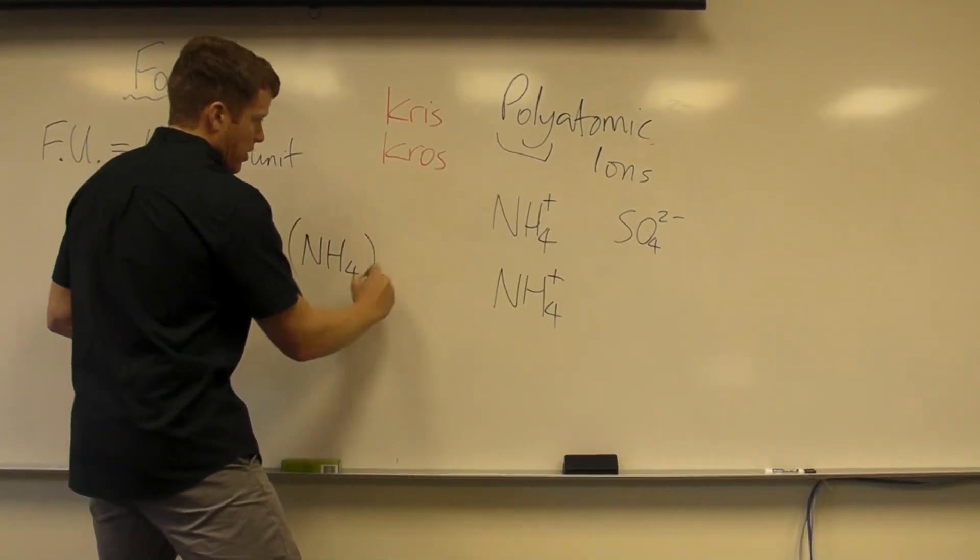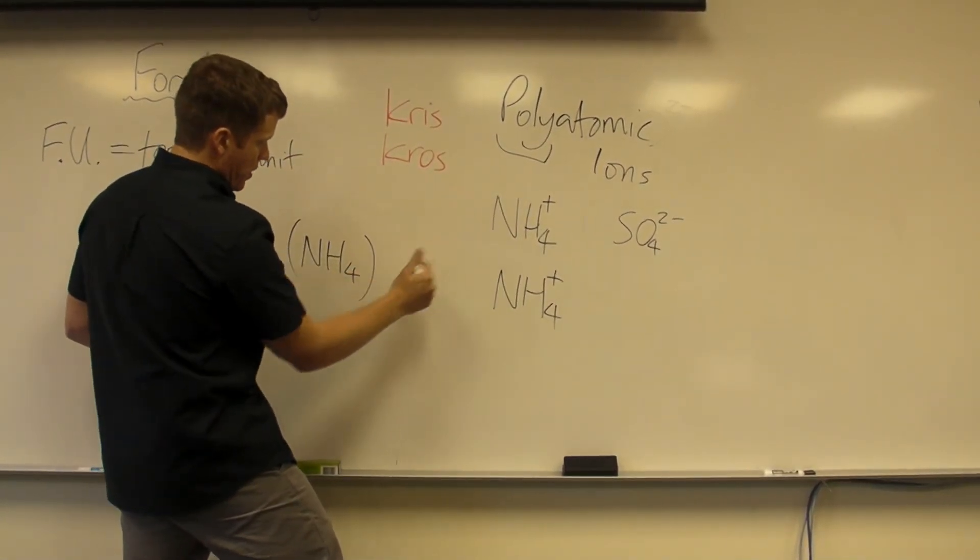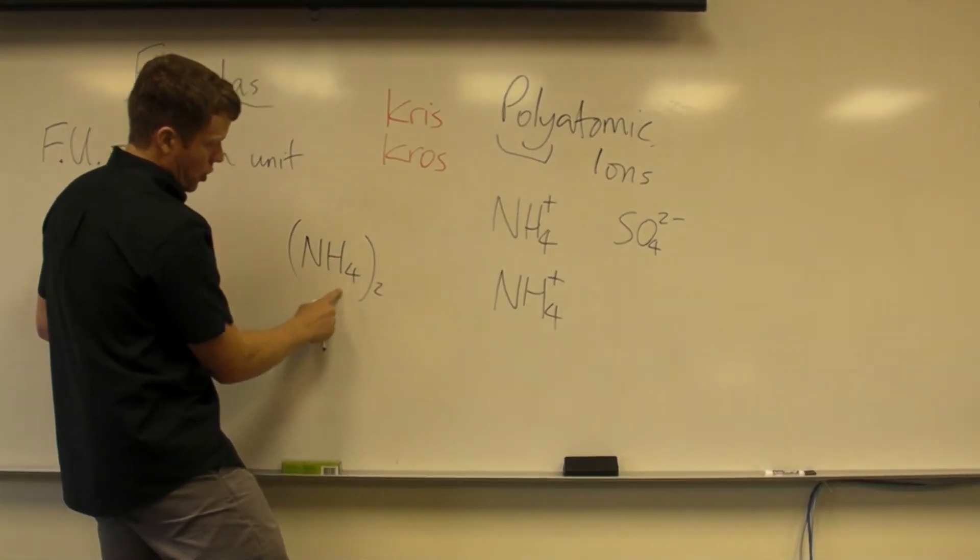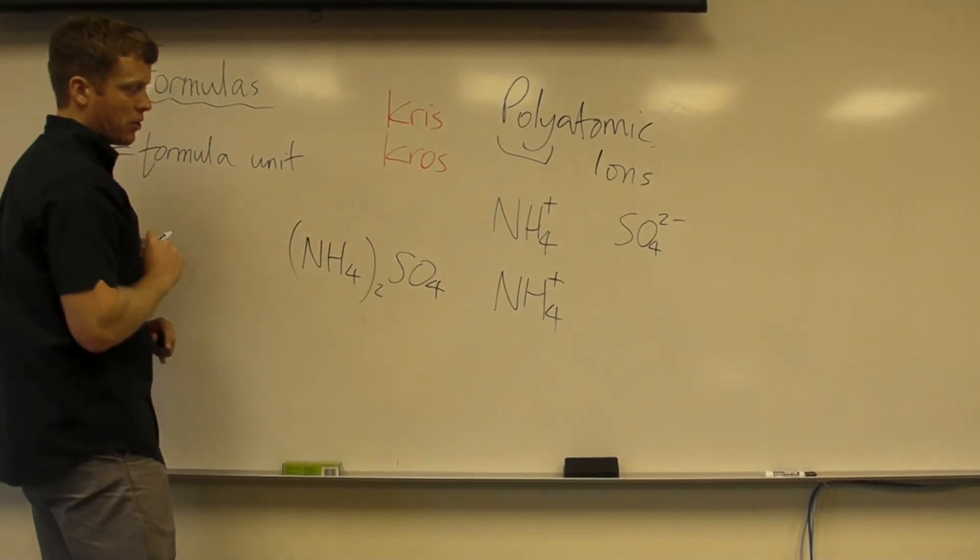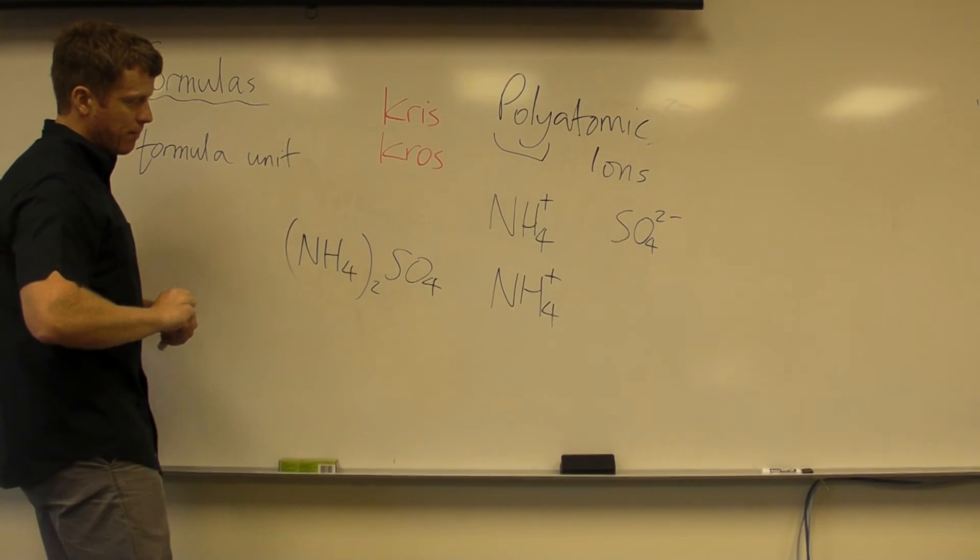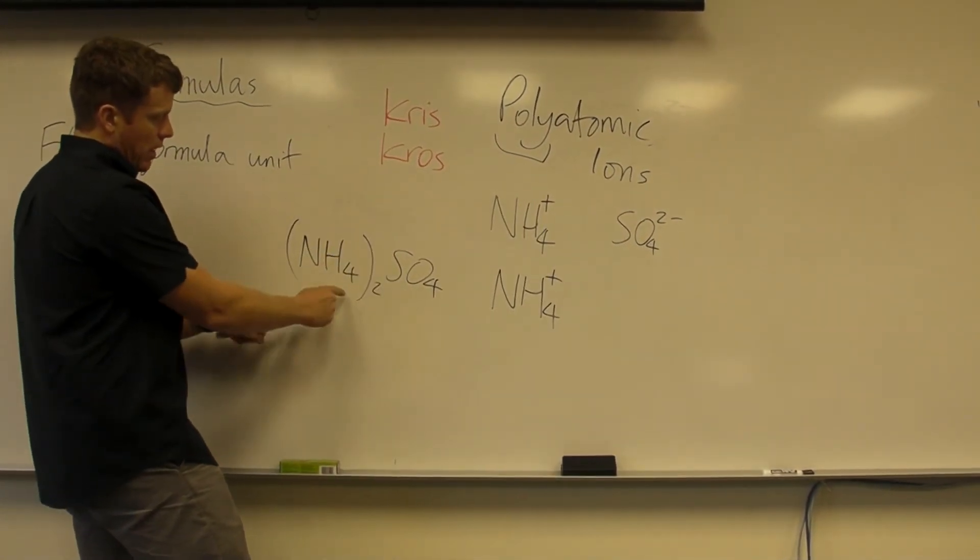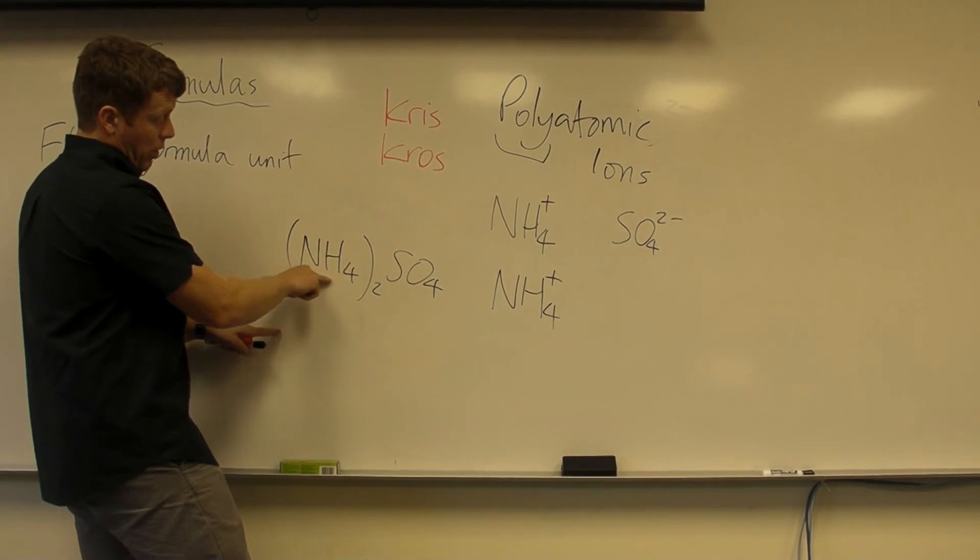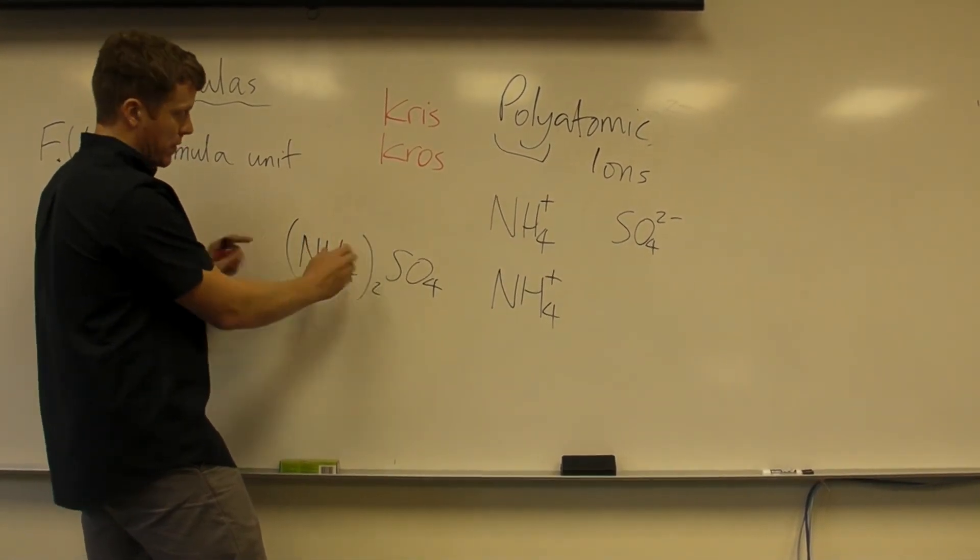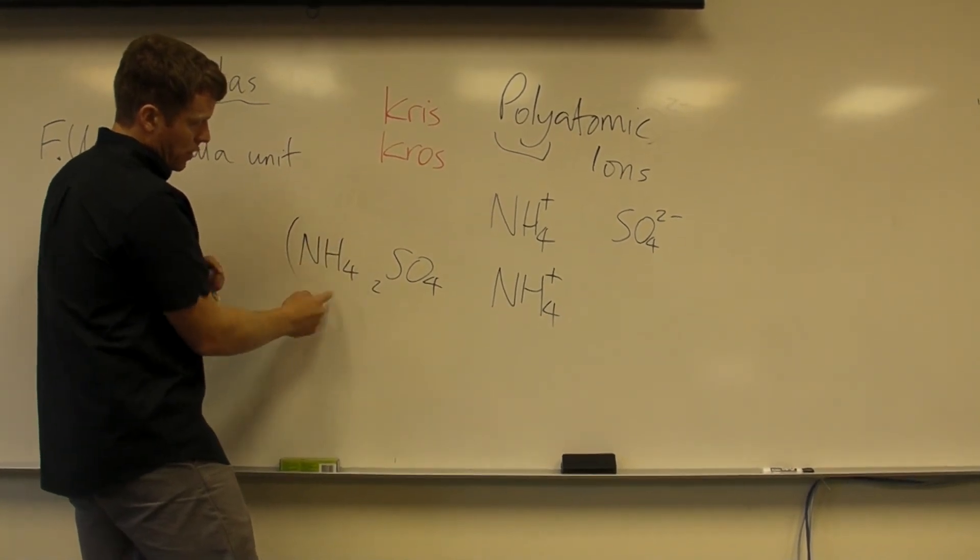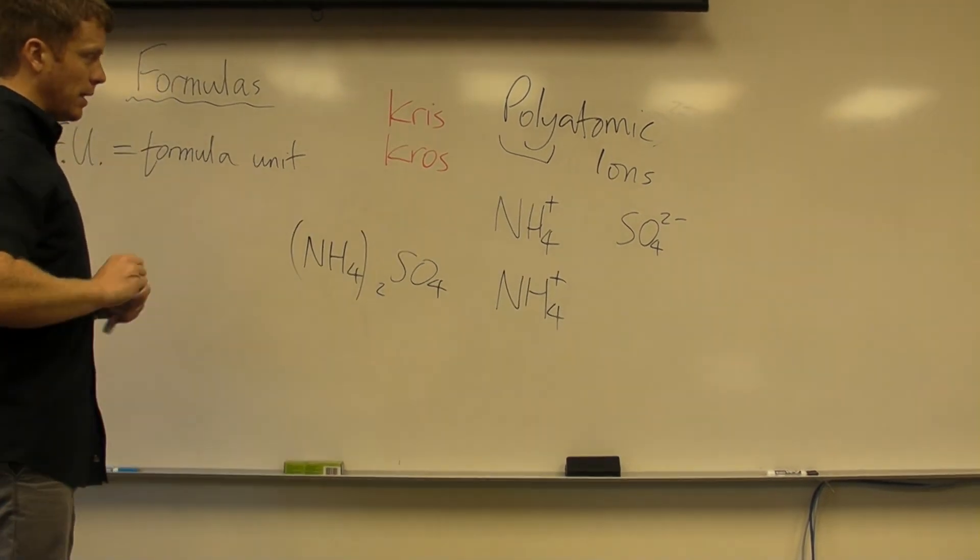The golden rule is that you don't mess with the subscripts ever. So, I have two of these. So, I use parentheses around it to show that there's two. When I just have one, I don't need parentheses. I can just write the ion out. So, two of these for every one of these. This is how you'd handle it if you've already got a number there. You don't mess with that number, but you need to show that there's two of them. You use parentheses. If you don't use parentheses, it looks like 42, which is ridiculous. So, parentheses is the way that we handle it.